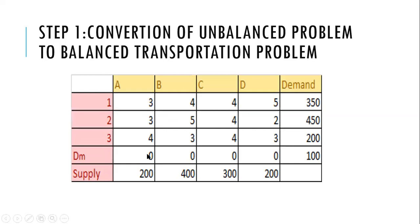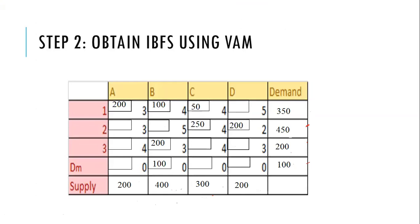We have added an extra dummy row with a supply of 100 units, and all cost values in that row are set to zero. This converts the unbalanced transportation problem into a balanced transportation problem.